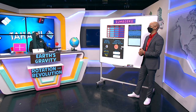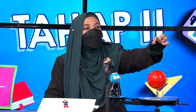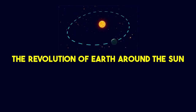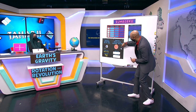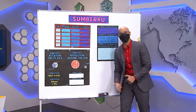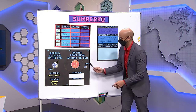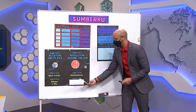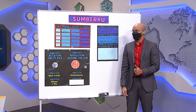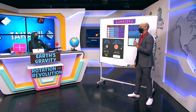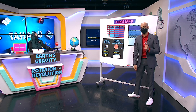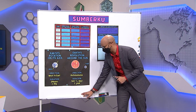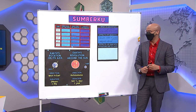Next, Earth's revolution around the sun. What is the name of the path where the Earth revolves around the sun? An orbit! And the direction? Anti-clockwise — the opposite of the clock direction. And the duration? One revolution equals one year, or more specifically 365 and a quarter days. That is absolutely right!